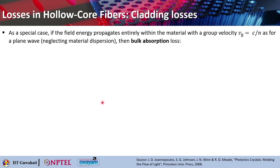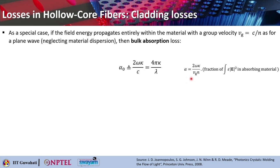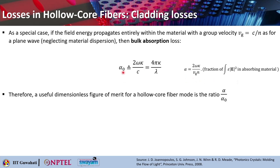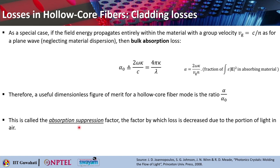As a special case, if the field energy propagates entirely within the material with group velocity v_g equal to c/n, as for a plane wave neglecting material dispersion, then the bulk absorption loss can be expressed as alpha_0 equals 2·omega·kappa/c, which equals 4·pi·kappa/lambda. One can then define a useful dimensionless figure of merit — the ratio alpha/alpha_0 — which is also called the absorption suppression factor: the factor by which loss is decreased due to the portion of light propagating in air.